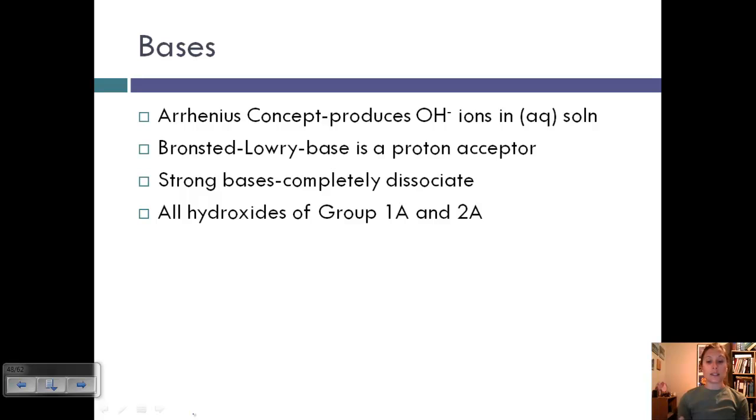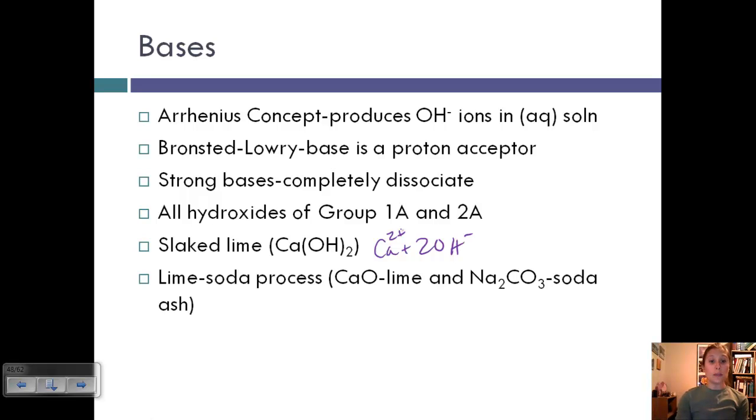Some are used more than others based on solubility and how much they cost. And all Group 2A will actually produce two OHs for every ion that they're bonded to. Some examples are slaked lime, calcium hydroxide. When this dissociates, it will produce a calcium and two OH- ions.